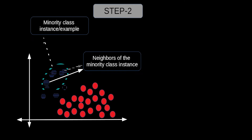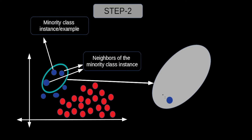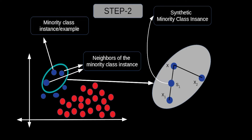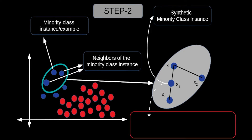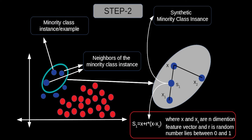In step 2, zooming in: x1 is the first neighbor and x2 is the second neighbor of the original minority class example x. We generate a synthetic example S1 by interpolating x and x1 using the formula: S1 = x + r × (x − x1), where x and x1 are n-dimensional feature vectors and r is a random number between 0 and 1. Similarly, S2 is generated by interpolating x and x2.